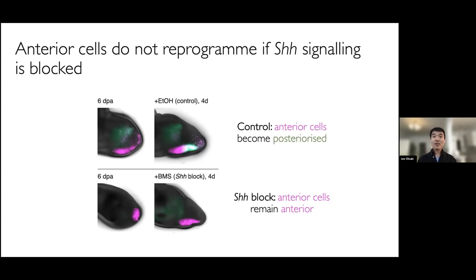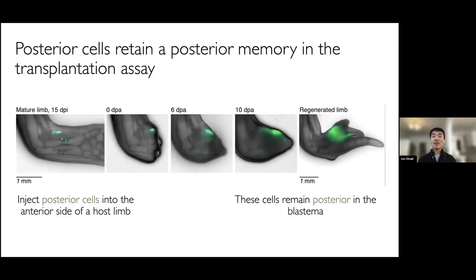To finish this experiment, we performed the inverse assay — transplanting posterior double reporter cells to the anterior side of an unlabeled host limb. The result was rather different: those posterior cells remained green both at steady state and also after amputation, showing that the posterior state is very stable and does not change readily towards an anterior identity. This reflects some inequality in the anterior-posterior positional memory system that had not previously been explored — anterior cells are readily reprogrammed to a posterior state, but posterior cells do not readily lose their posterior memory.